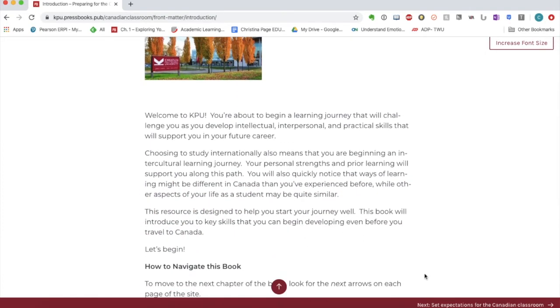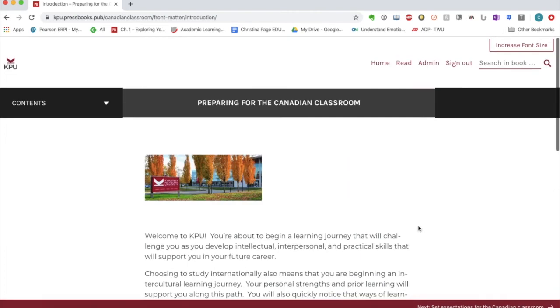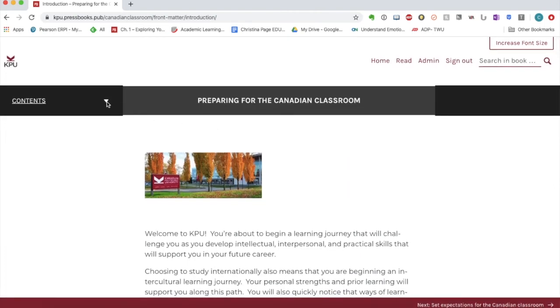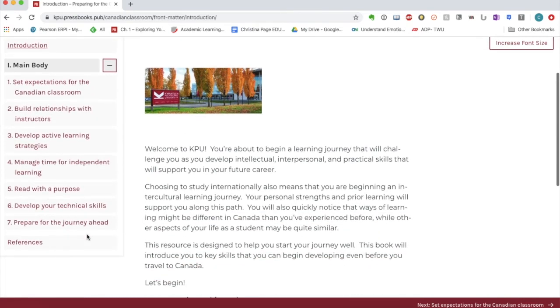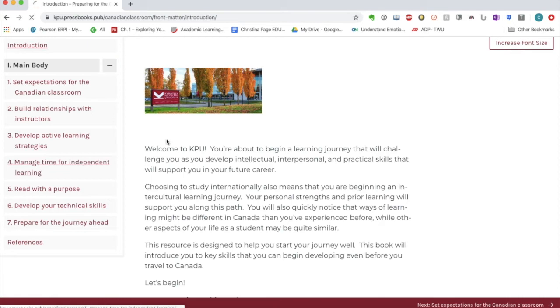At the bottom of each screen, you'll see an arrow to let you go on to the next page. If you want to return to a particular chapter, go to Main Body, click on Plus, and navigate to whichever chapter you would like to read.